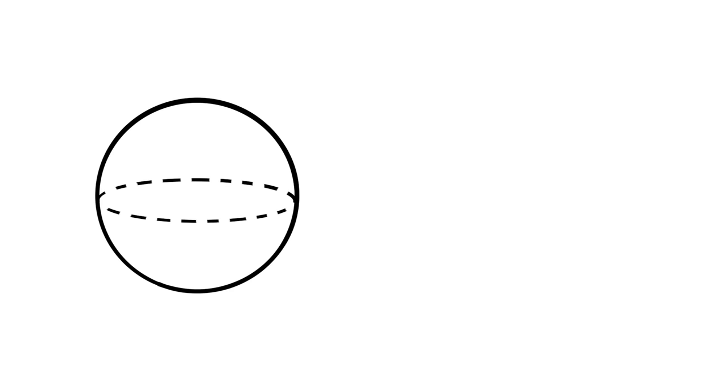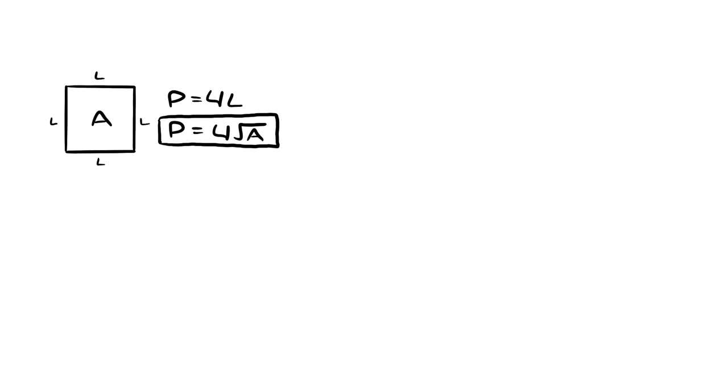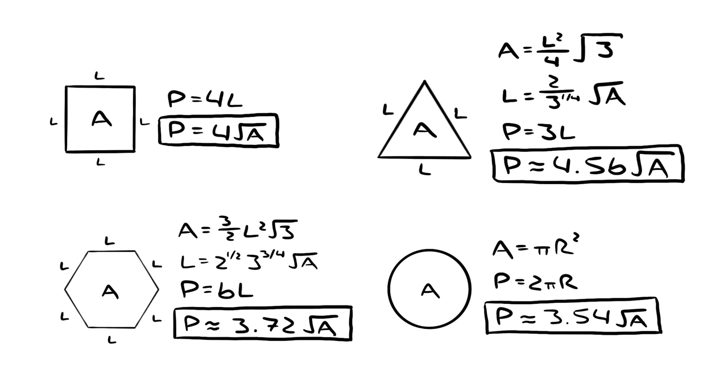Common sense tells us that a sphere in 3D, or a circle in 2D, has the lowest ratio of surface area to volume. If you try out a few shapes, like a square, a triangle, a hexagon, you'll find that they all have a higher perimeter than a circle.